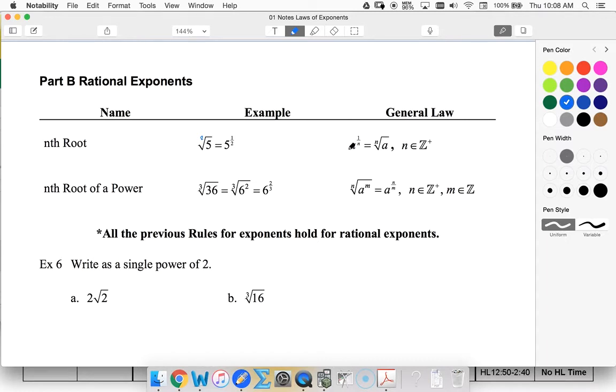And a to the one over n becomes the nth root. n has to be a positive integer.